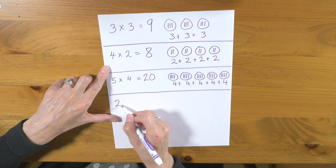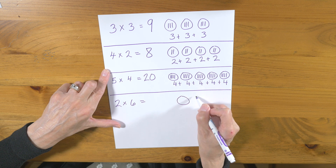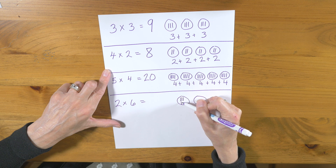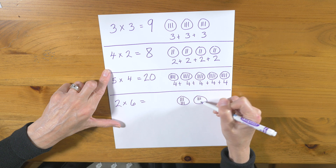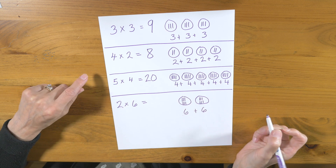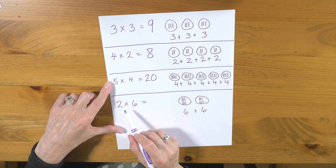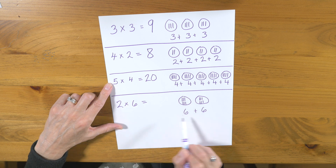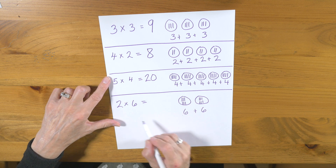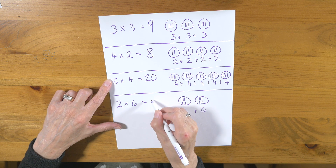Let's do an example of 2 times 6. I draw my 2 groups and I put 6 in each. Remember how we were talking in an earlier lesson how the 2 times table is like adding doubles or counting by 2s — you can see that there in the example. So 6 plus 6: 2 groups of 6 is 12.